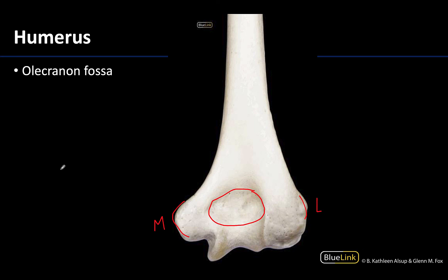Those were a lot of structures — there are many important things going on with the humerus both in terms of articulation and muscle attachment. Review these, make sure to ask questions early and often, and thank you for your time and attention. I'll see you at station 3.